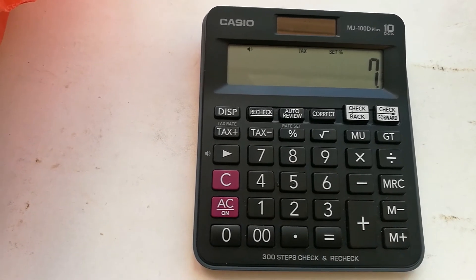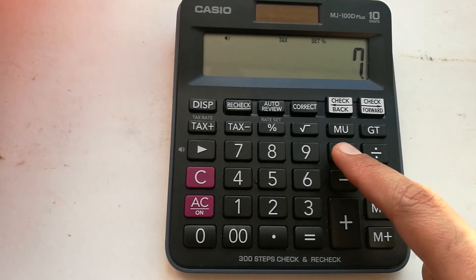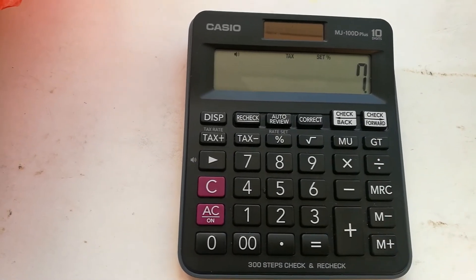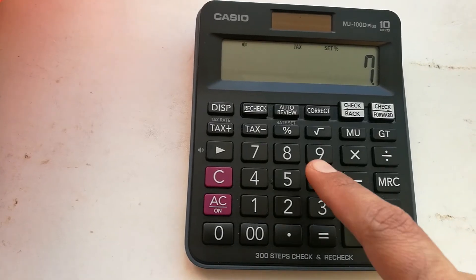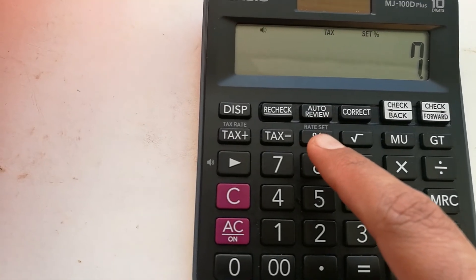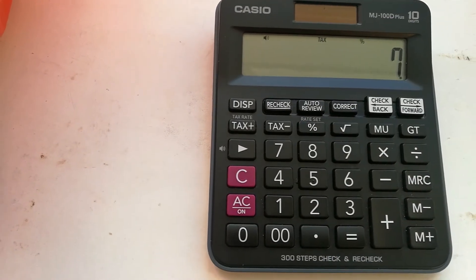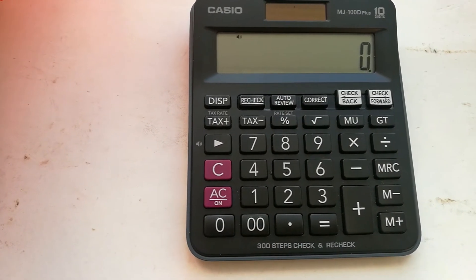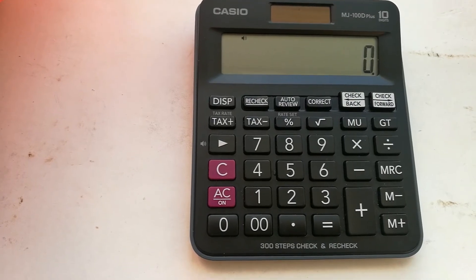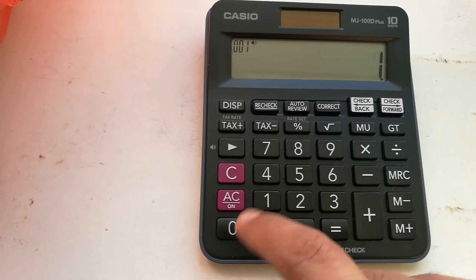Then we press this multiply button, and then we press this percentage button. Okay, so now this tax rate has been set.